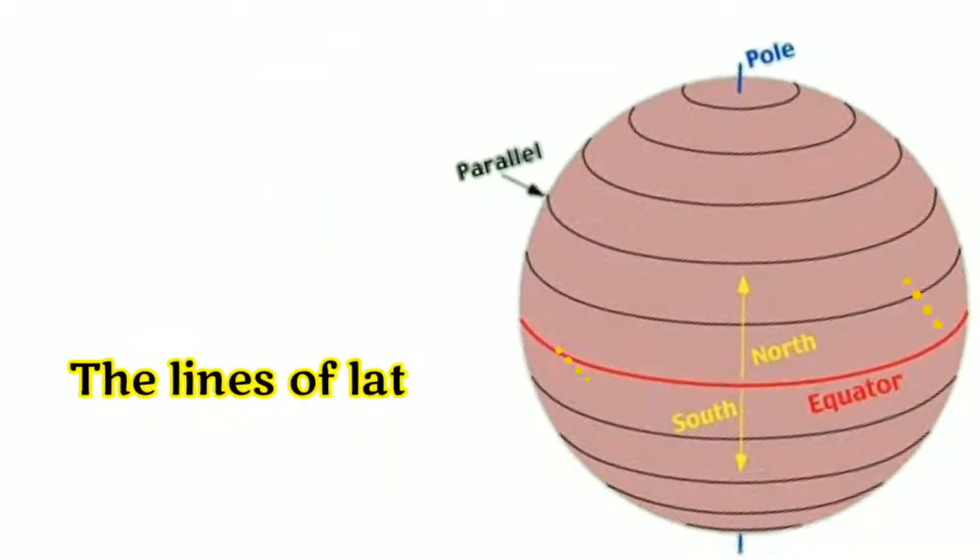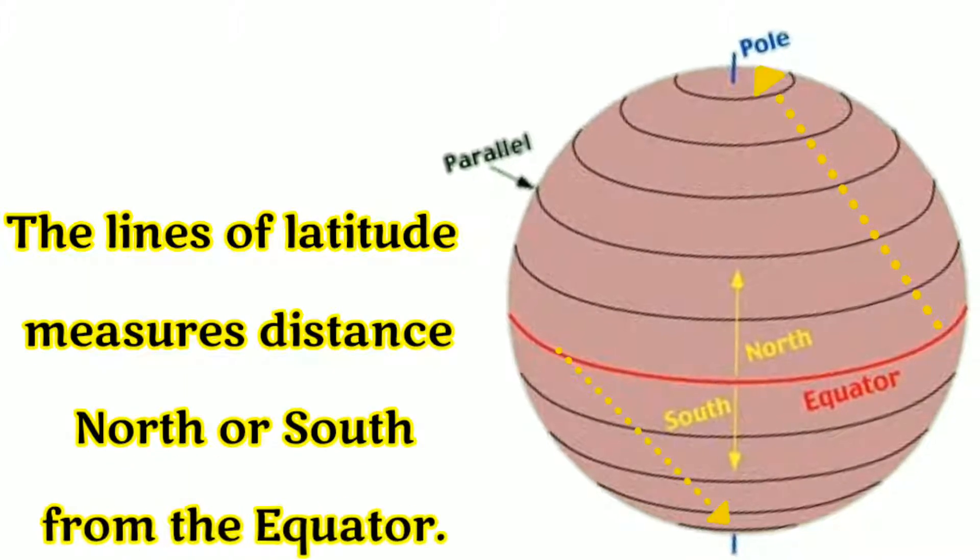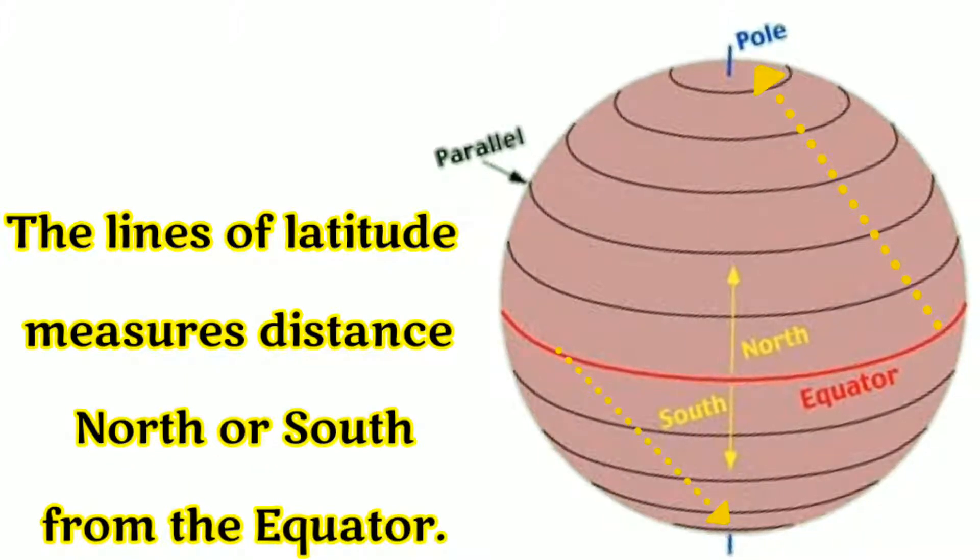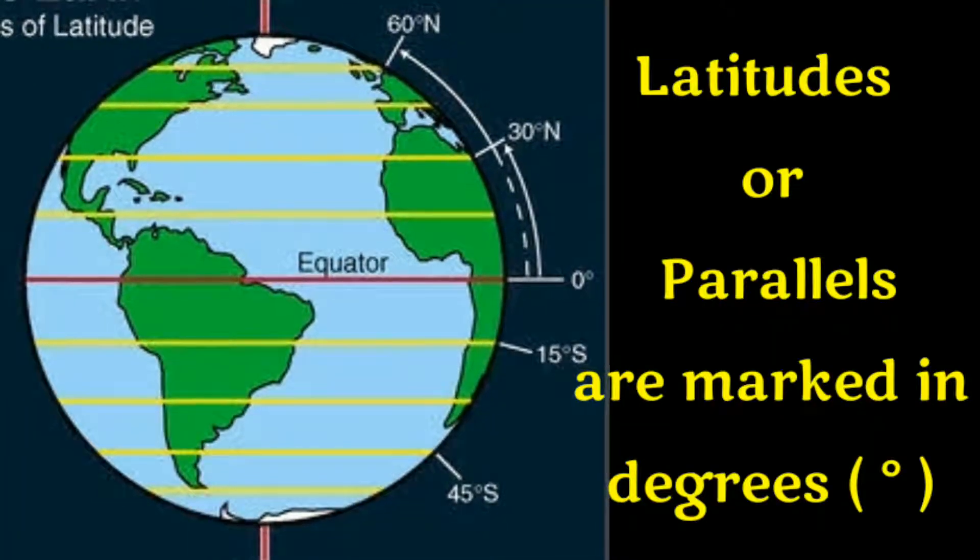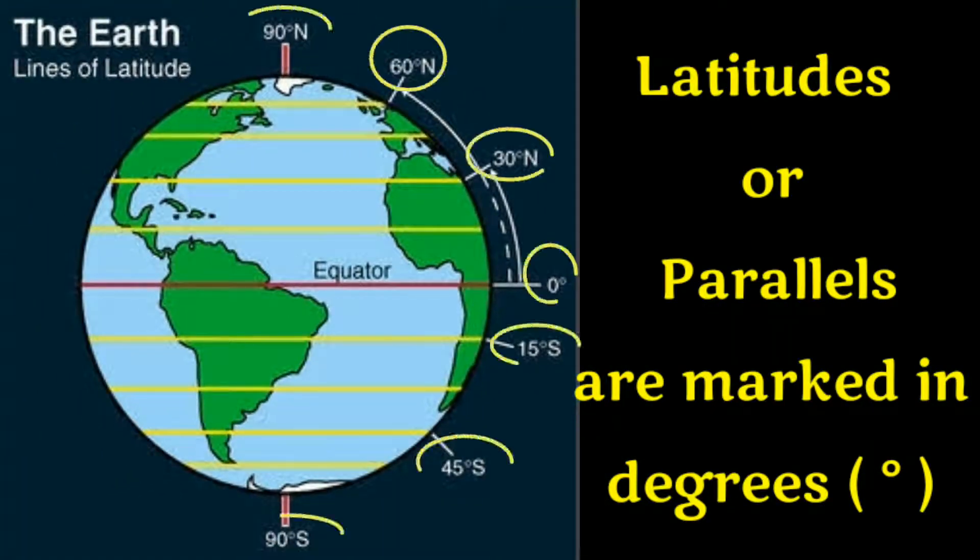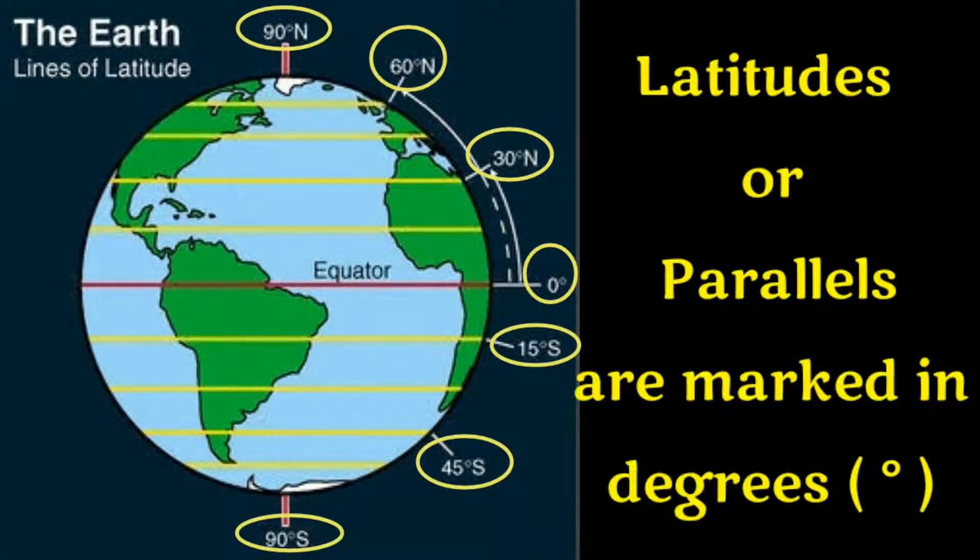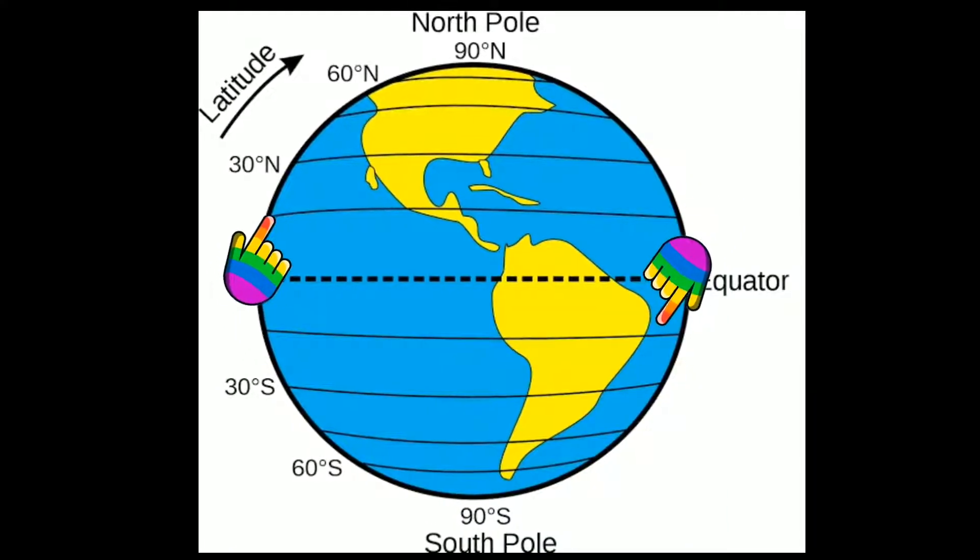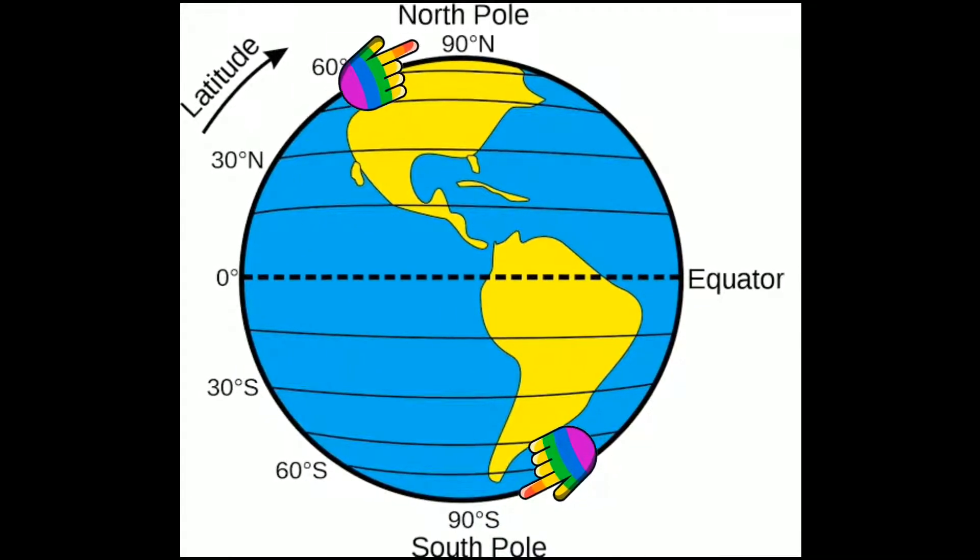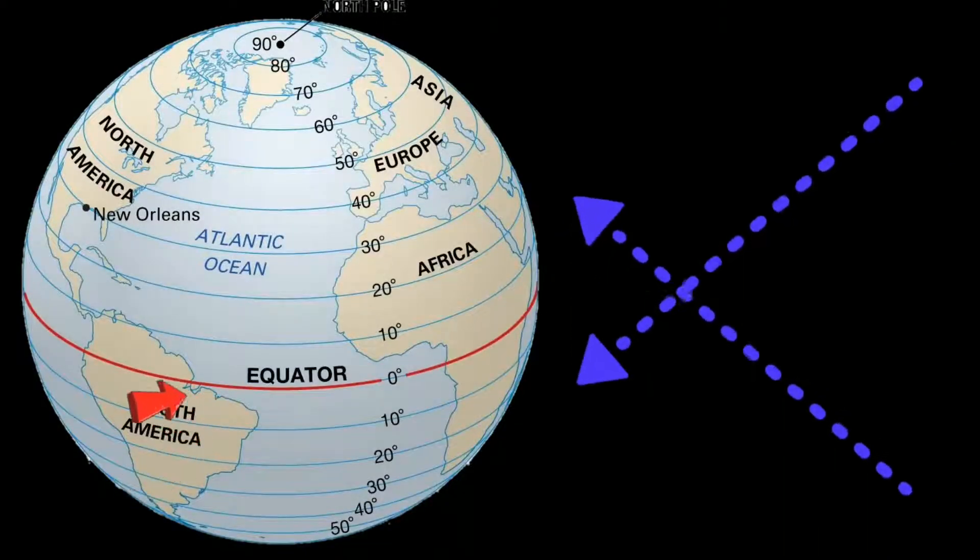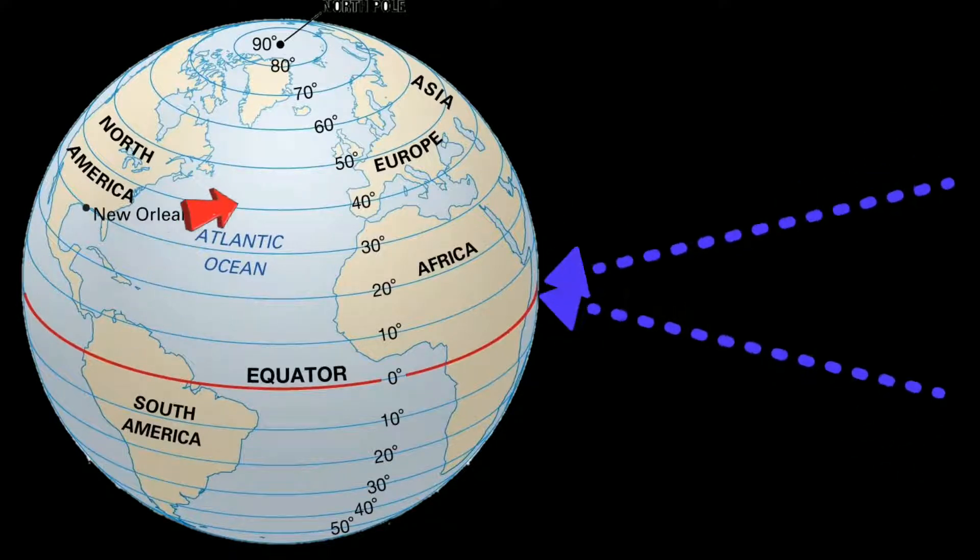The lines of latitude measure distance north or south from the equator. The lines of latitude or parallels are marked in degrees.